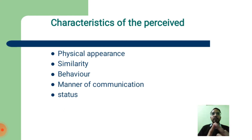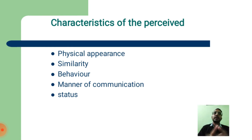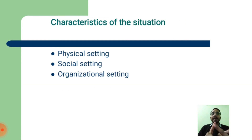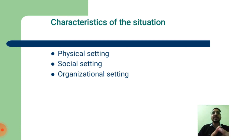Characteristics of the perceived include: physical appearance, similarity, behavior, and manner of communication, and status. Characteristics of the situation include: physical settings, social settings, and organizational settings.